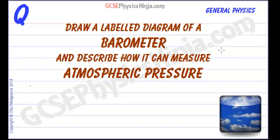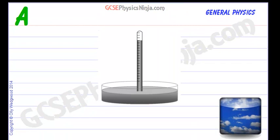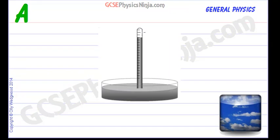Draw a labelled diagram of a barometer and describe how it can measure atmospheric pressure. A barometer is simply a glass tube, about a metre long, about 100 centimetres, so it's quite a long glass tube.